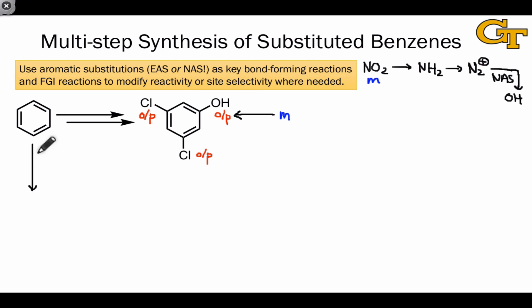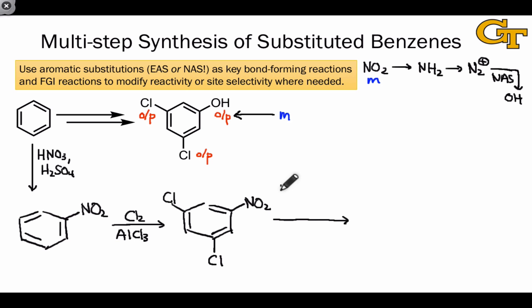In the first step, we nitrate using HNO3 and sulfuric acid. At this point, we have the meta-directing group that we need, and so we can use Cl2 and AlCl3 in order to install both chlorines. I'll skip over the aniline intermediate since all we're going to do to that is convert it to a diazonium group.